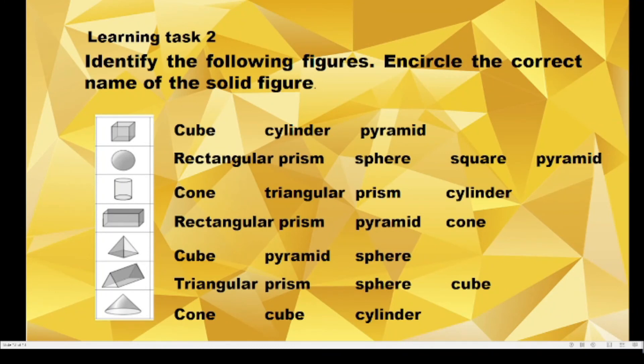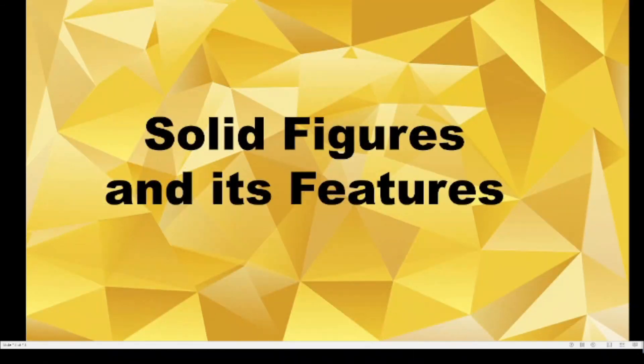For our learning task number two: Identify the following figures. Encircle the correct name of the solid figure. In the first row our choices we have cube, cylinder, and pyramid. Second row: rectangular prism, square, and pyramid. For the third figure: cone, triangular prism, cylinder. Fourth: rectangular prism, pyramid, cone. Fifth: cube, pyramid, sphere. Next: triangular prism, sphere, and cube. And the last one we have cone, cube, and cylinder. And that is the end of our first part of the lesson. See you in part two.